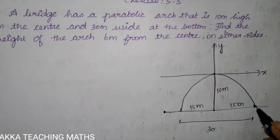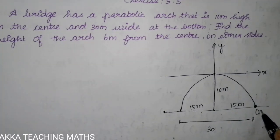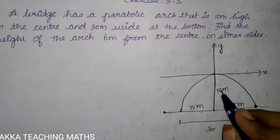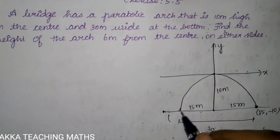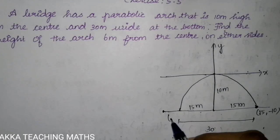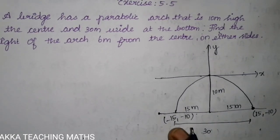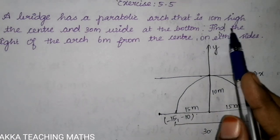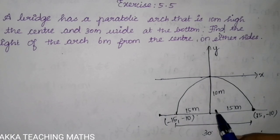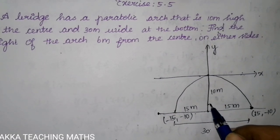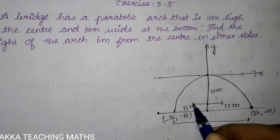So this point is positive side of x. The y-axis is on the negative side. This point is also on the positive side of x, and the x-axis has a negative side. So the coordinates are minus 15 and minus 10 on the negative side.